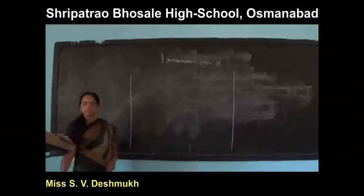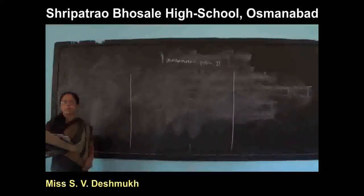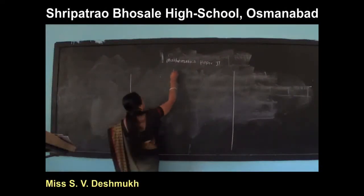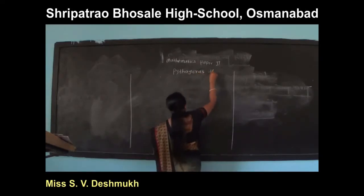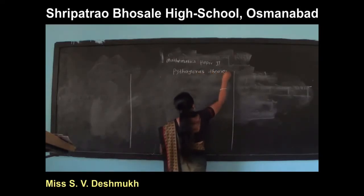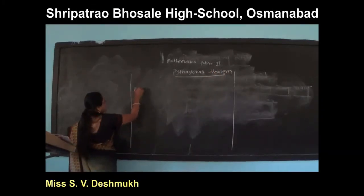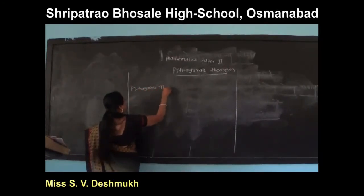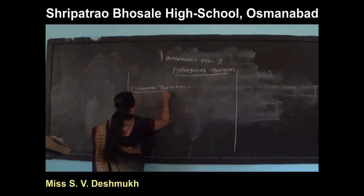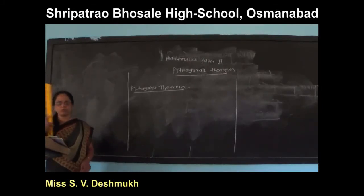We are going to study mathematics paper second, Pythagoras theorem. In a right angle triangle, the square of hypotenuse is equal to the sum of squares of the remaining two sides.